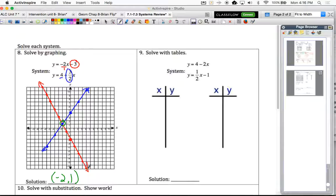So 4 minus 2x, 1 half x minus 1. Okay, so if you're on your calculator right now, you might see that they both share the same point at 2, 0.